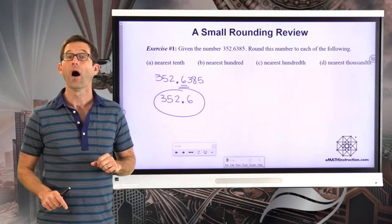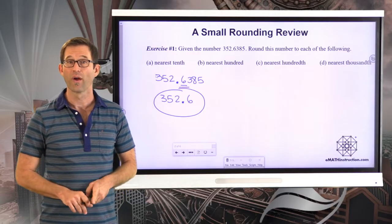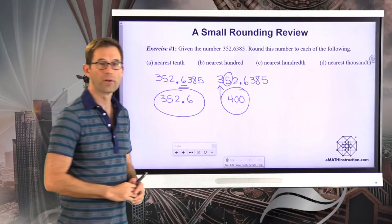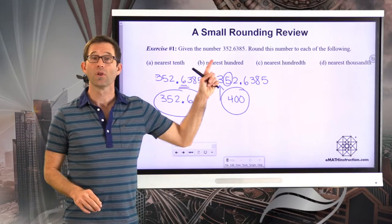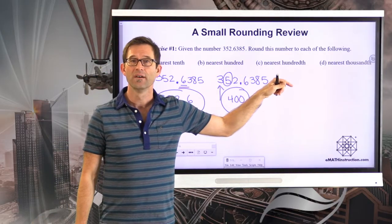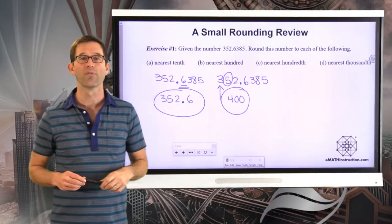Let's round to the nearest hundred — notice, not hundredth, hundred. With 352.6385, the hundreds digit is the three. I look at that five, and that tells me to round up. This rounds to 400. Simply put, this number is closer to 400 than it is to 300. Now let's do it to the nearest hundredth and the nearest thousandth.